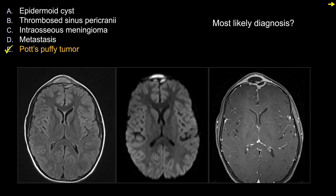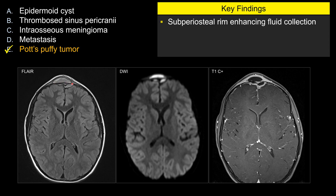The best choice in this case is choice E, Pott's puffy tumor. Let's look at some of the key features that made choice E the best answer here. A fluid collection overlies the frontal calvarium and is bright on FLAIR, so there is not complete suppression like you see with CSF or pure fluid.